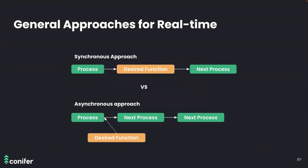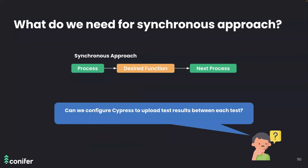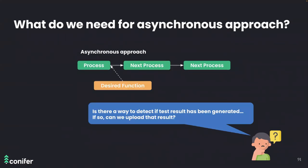At a high level, there are two approaches: we can insert the desired functionality directly into the test execution process — uploading immediately after each test file runs but before the next begins — or we can create a separate process with the sole responsibility of uploading test results as they are created. For the synchronous approach: can we configure Cypress to upload results between each test execution? For the asynchronous approach: can we detect when test results have been generated and upload them?